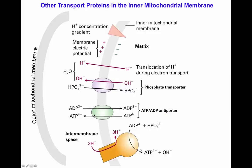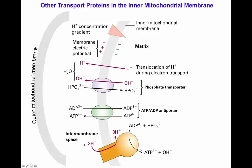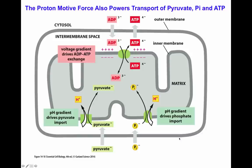The ATP synthase uses the proton gradient — with greater concentration in the intermembrane space — to generate ATP from ADP and phosphate, producing ATP and a hydronium ion. The proton motive force can also be used to power the transport of pyruvate, phosphate, and ATP.